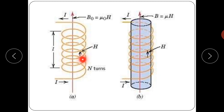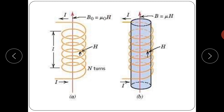In a solenoid coil, the absolute permeability is mu_0 times H. For a bar magnet, the permeability is mu times H, where mu is the permeability of the material. The field intensity H applies to both cases, but the permeability differs: mu_0 for air and mu for the magnetic material.